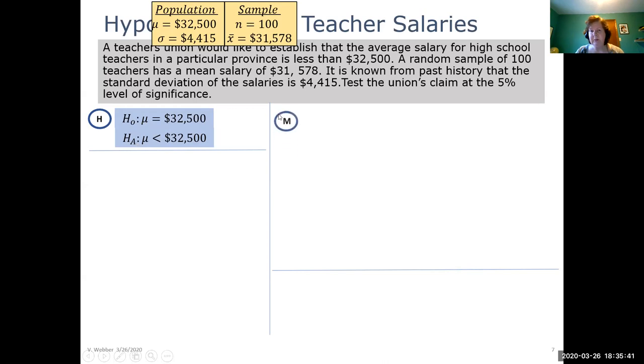Let's move on to our model now. We have a one tail test, it's a less than test. We're told that alpha is 5% straight from the question. Now we can look up our Z critical, and we can see our Z critical is negative 1.645.